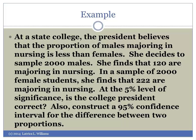In a sample of 2,000 female students, she finds that 222 are majoring in nursing. At the 5% level of significance, is the college president correct? Also, construct a 95% confidence interval for the difference between two proportions.